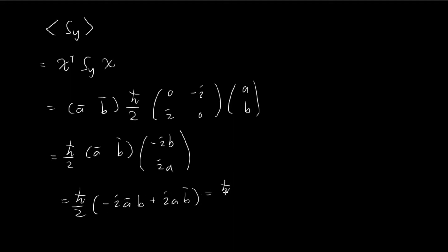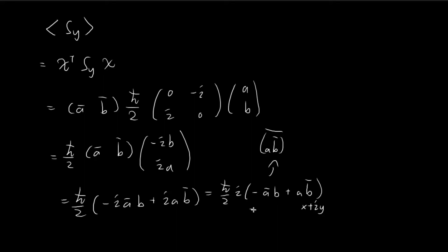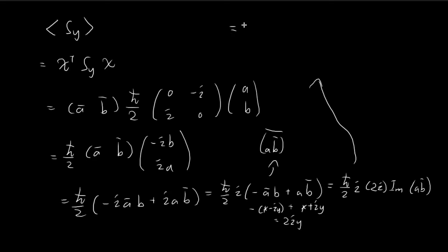Pulling out the imaginary factor i, we have i·(−A*B + AB*). Since A*B is the conjugate of AB*, if AB* = x + iy then −A*B = −(x − iy), and adding −(x − iy) + (x + iy) gives 2iy = 2i·Im(AB*). The 2s cancel and the two i's give i² = −1, so the expected value of Sy is −ℏ·Im(AB*).